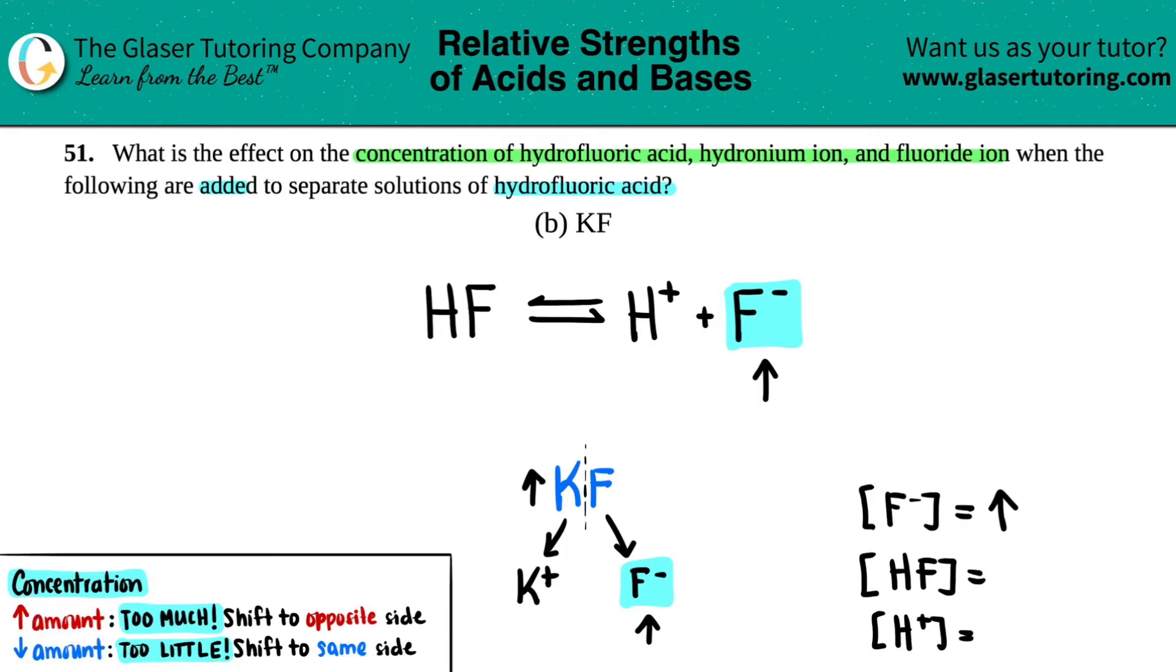This goes back to Le Chatelier's principle. If you increase an amount of something, you have way too much. You're always going to shift to the opposite side. Since you're increasing on the products, you are going to shift to the opposite side, which is the reactants.